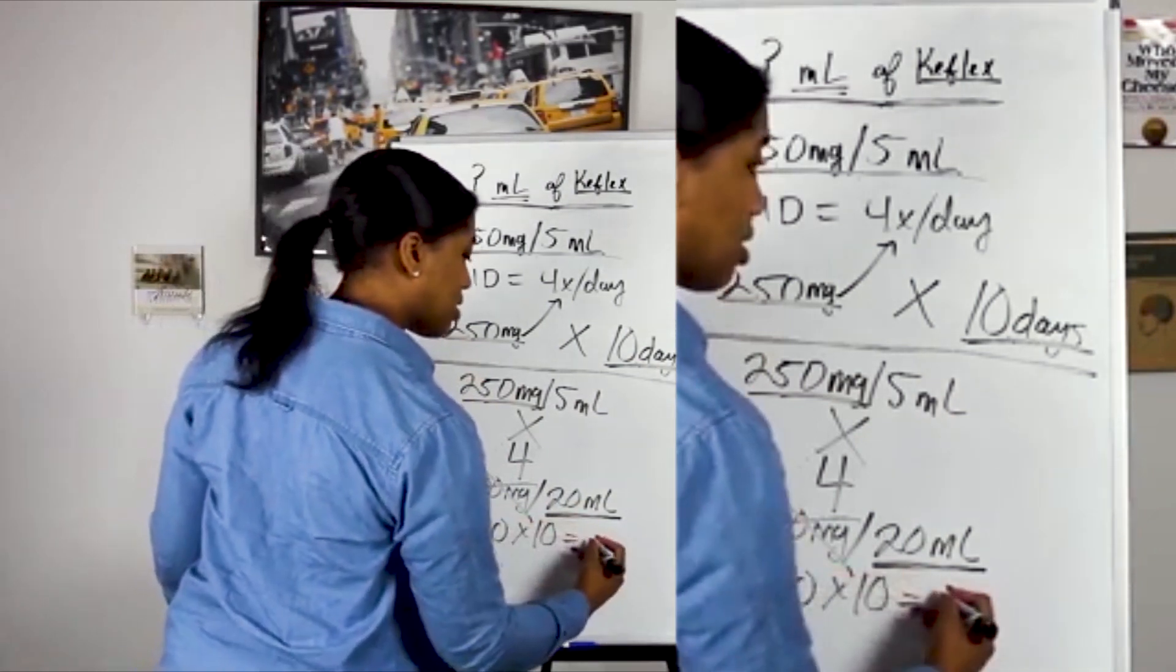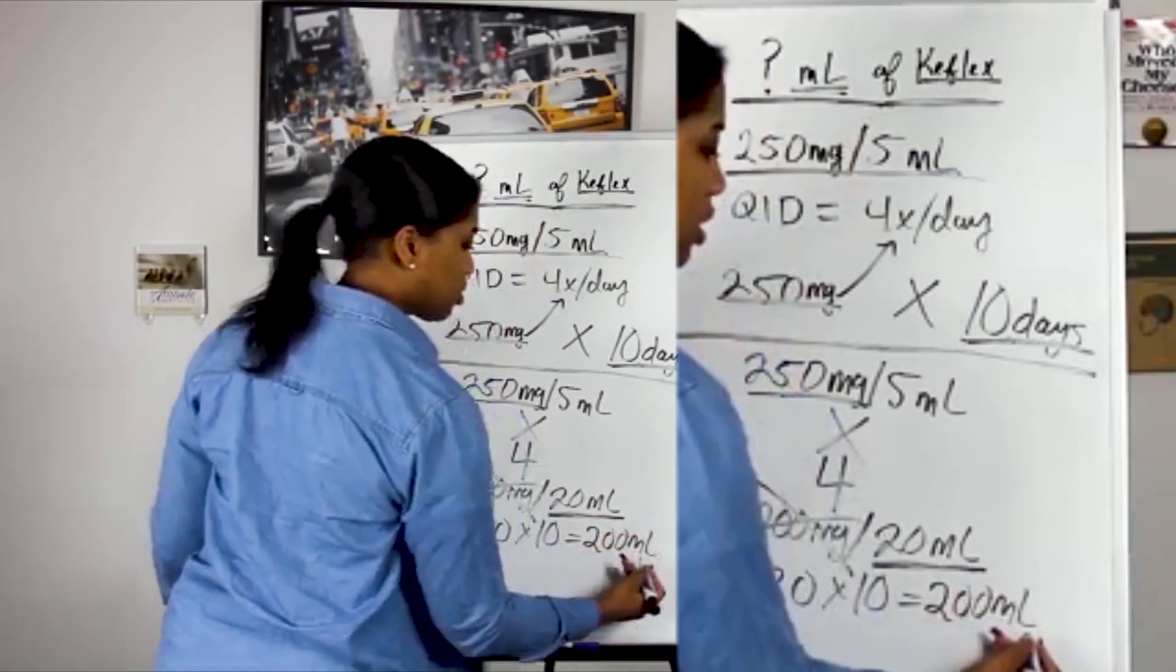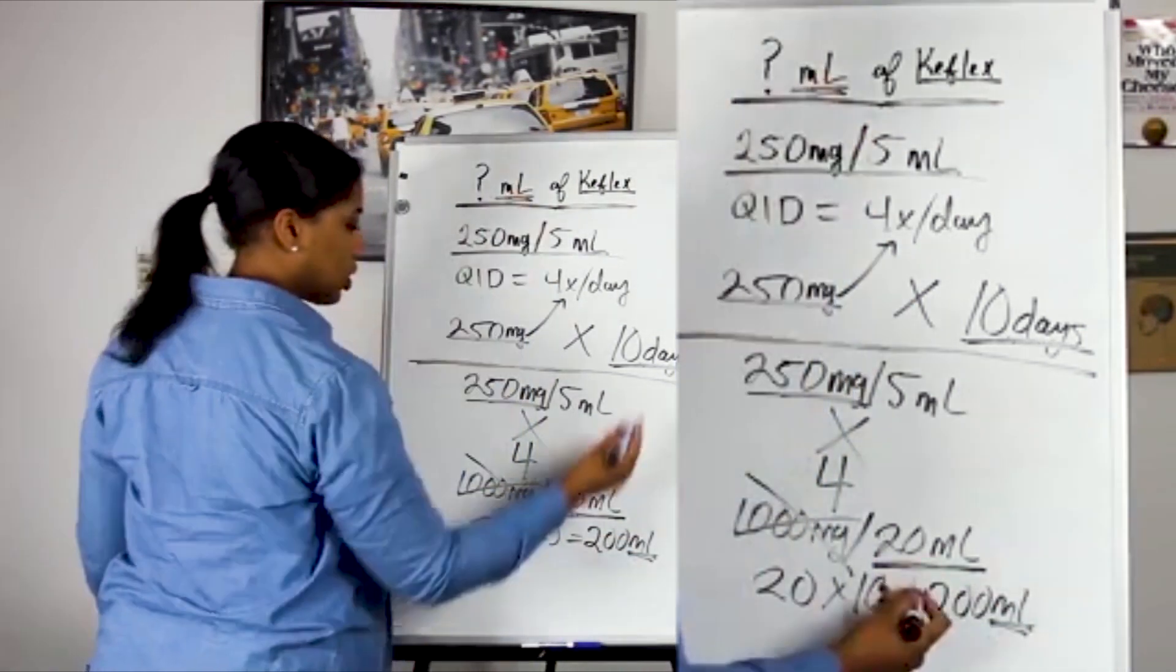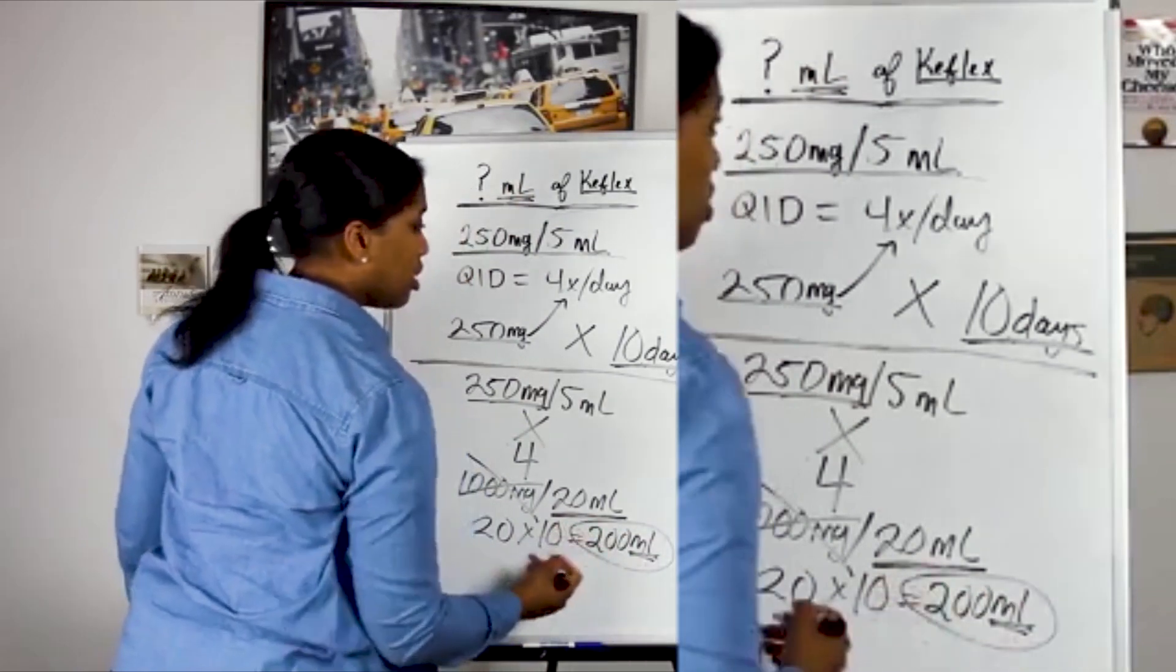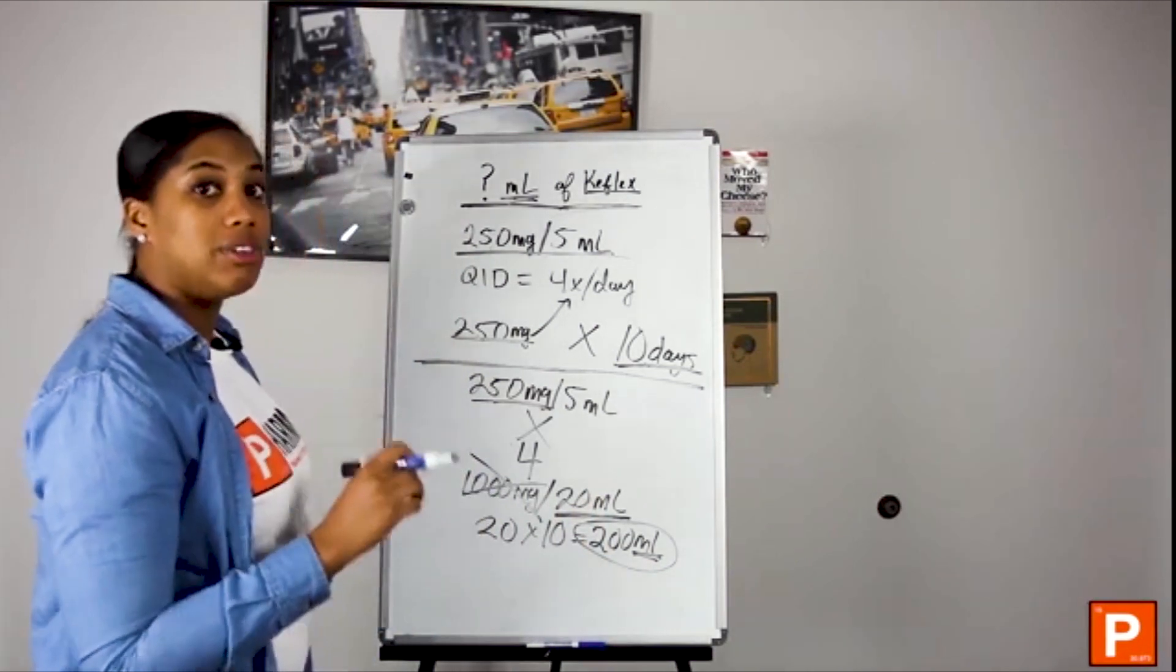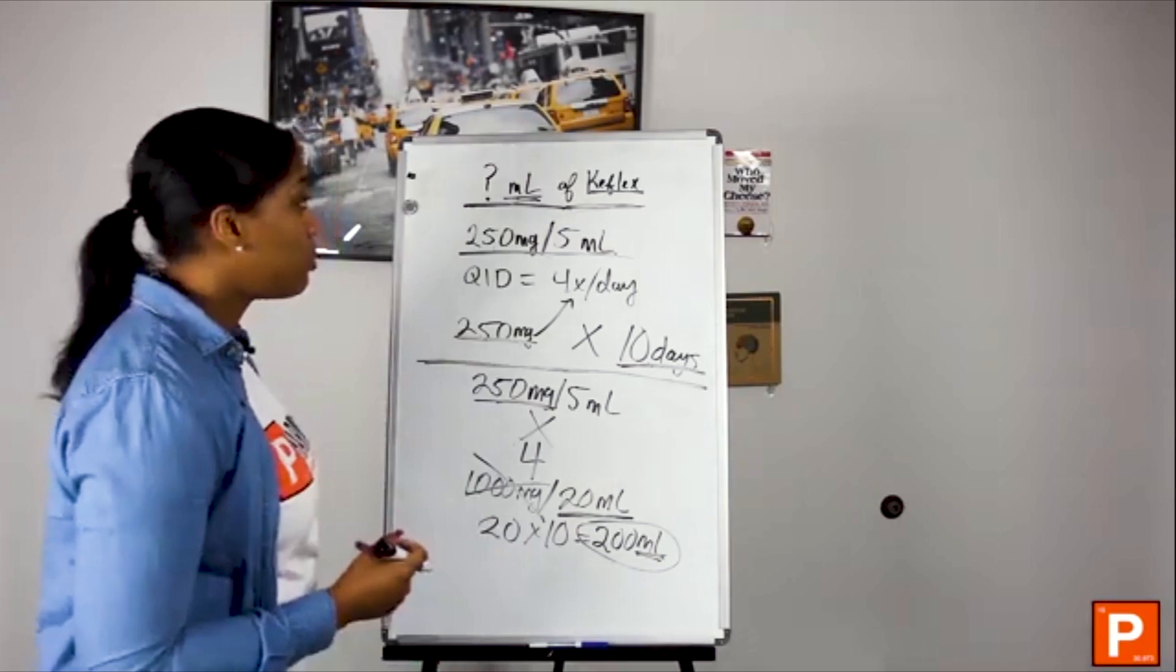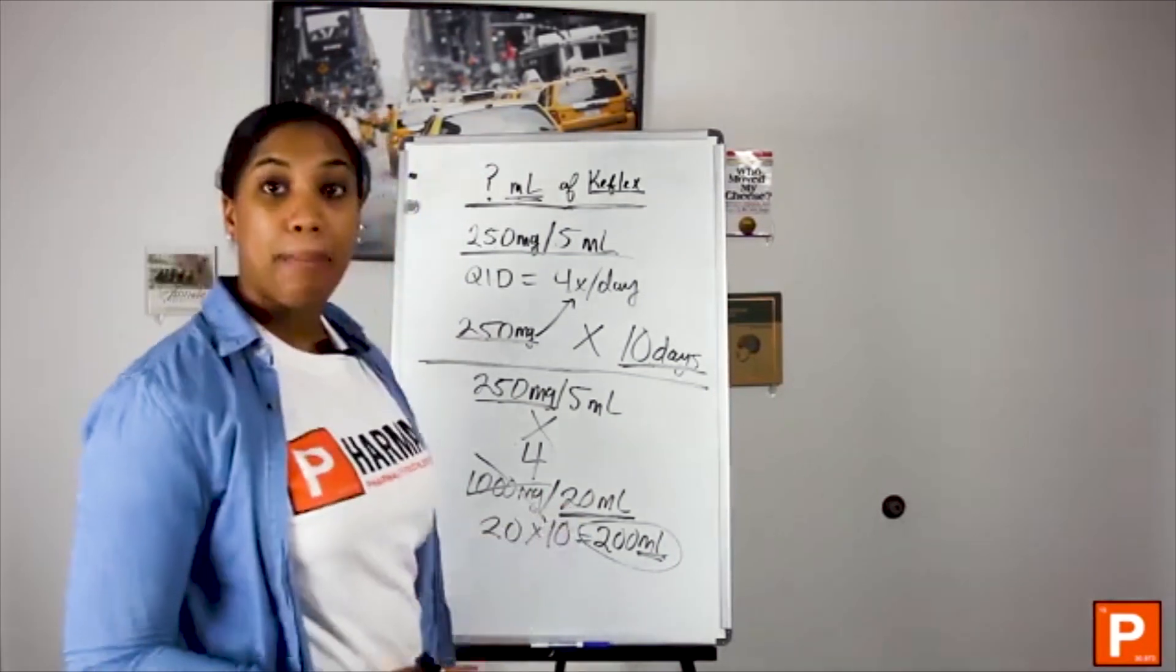This is going to give you 200 milliliters. Look at your units, does it match? Absolutely it does. So the answer for this problem is 200 milliliters of the Keflex oral suspension medication. That's simple and plain, that's how you do that problem.